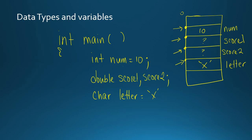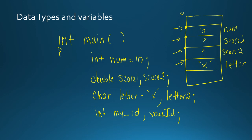You cannot declare variables of different data types separated by commas — commas only work to separate variables of the same data type. When choosing names, notice they have no white space, don't start with a number, and have no special characters. For more descriptive names, you can use an underscore like `my_id`, or use uppercase letters like `myId` — either way is fine as long as there's no white space and you're not starting with a number or using special characters that aren't allowed.